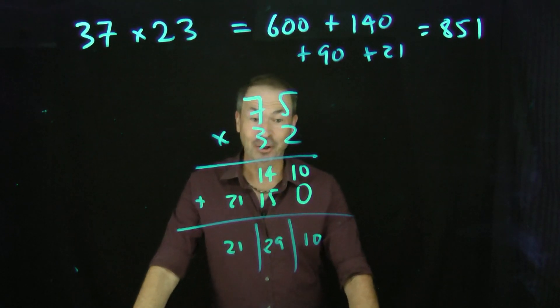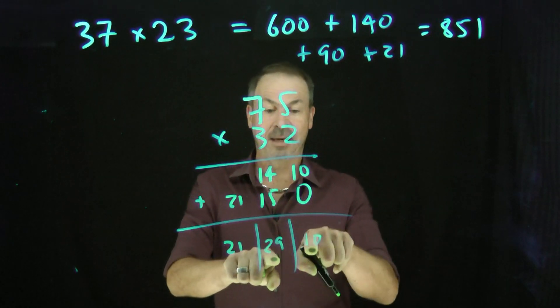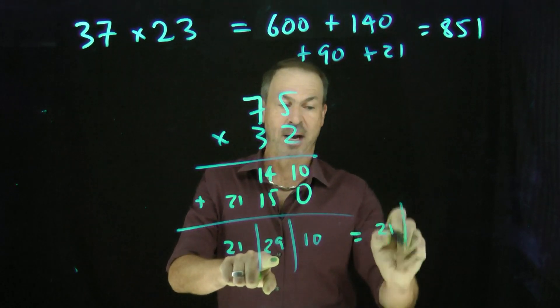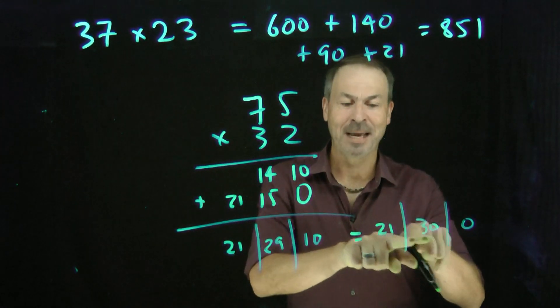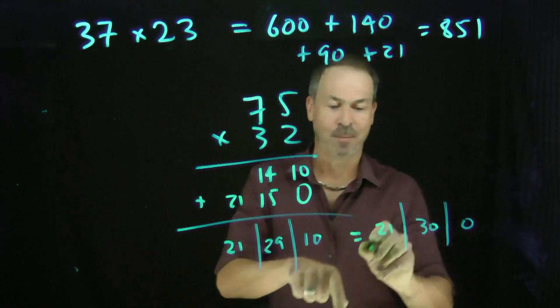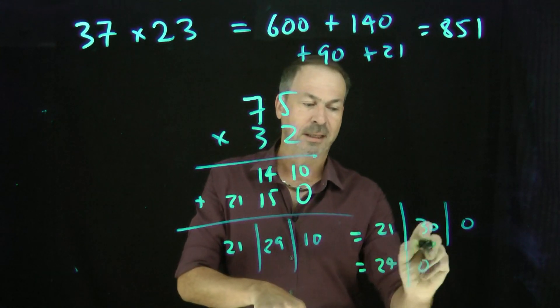Now do the explosions. 10 will explode here. Make an extra dot there. Leaving 0 behind. So this is really 21, 30 with 0 behind. 3 explosions here. Kaboom and Kabal Kazing. Add 3 more dots there. Leave 0 behind. So 24, 0, 0.